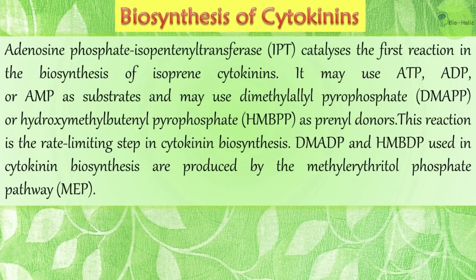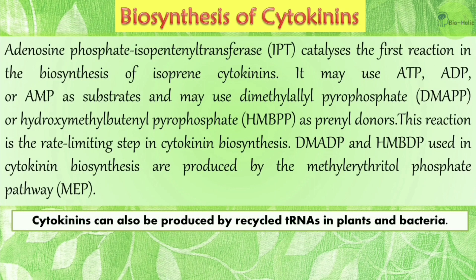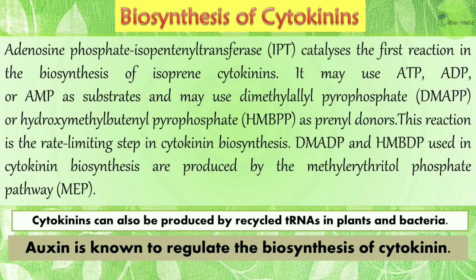Regarding cytokinin biosynthesis, adenosine phosphate isopentenyl transferase (IPT) catalyzes the first reaction. It may use ATP, ADP, or AMP as substrates and may use DMAPP (dimethylallyl pyrophosphate) or HMBPP (hydroxymethylbutenyl pyrophosphate) as prenyl donors. This reaction is the rate-limiting step of cytokinin biosynthesis. DMAPP and HMBPP used in cytokinin biosynthesis are produced by the methyl erythritol phosphate (MEP) pathway. Cytokinins can also be produced by recycled tRNAs in plants and bacteria, and auxin is known to regulate cytokinin biosynthesis.